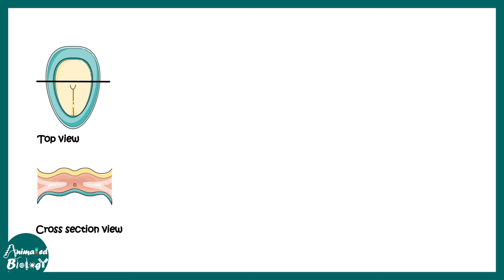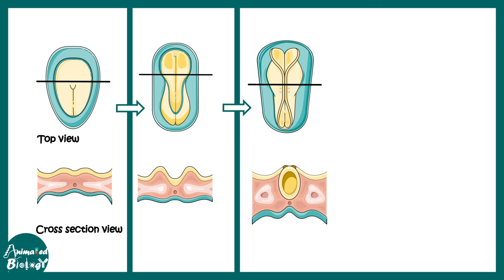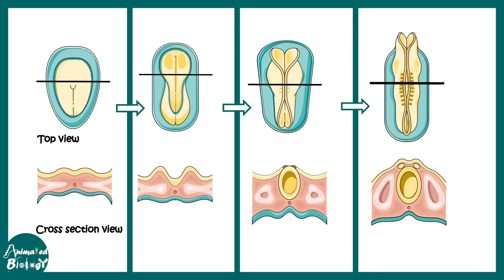Our brain develops from a sheet of cells known as the neuroectoderm. We are looking at this neural tube formation in a dorsal view and a cross sectional view. The yellow layer would eventually be folded and it will give the blueprint of the nervous system. A neural groove or dimple forms initially, then gets deeper and eventually rolls into a tube — this is known as neural tube closing.